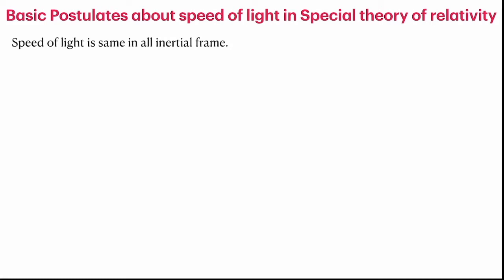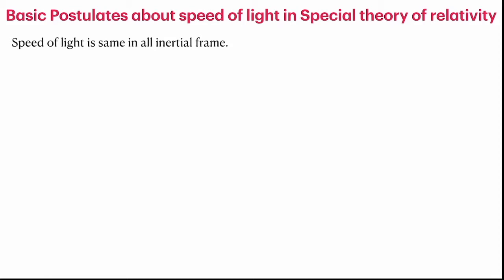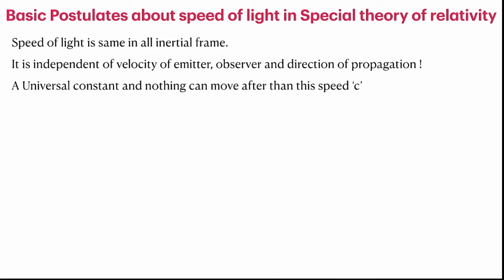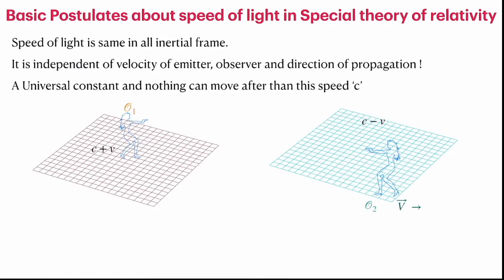Einstein's basic postulate of special relativity is that the speed of light is the same in all inertial frames. This postulate had been verified by a series of experiments even before special relativity was formulated — the Michelson-Morley experiment being the key one. In addition, the postulate states that the velocity of light is independent of the velocity of the emitter or the observer. It is simply a universal constant, and no signal or object can move faster than the speed of light. Both observers shooting lasers at each other from different inertial frames should observe the same speed of light.